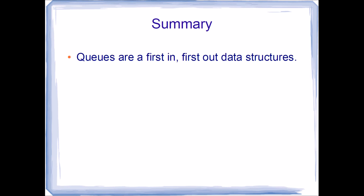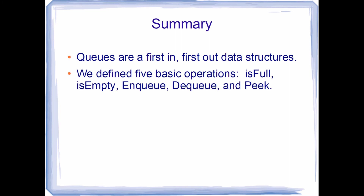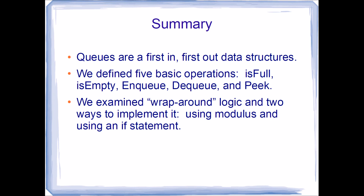To summarize: queues are a first in, first out data structure, meaning values go in one end of the array and come out the opposite end. We defined five basic operations — ISFULL, ISEMPTY, ENQUEUE, DEQUEUE, and PEEK. We examined the wraparound logic and looked at two ways to implement it: using modulus, or using a combination of an if statement and an assignment statement.